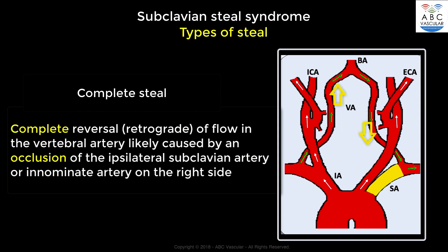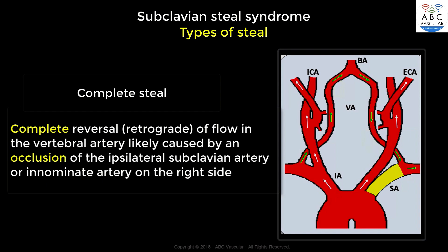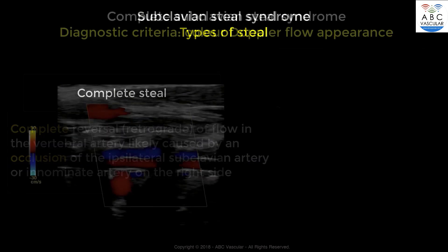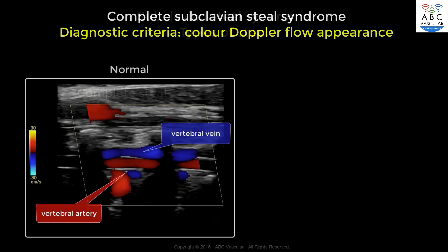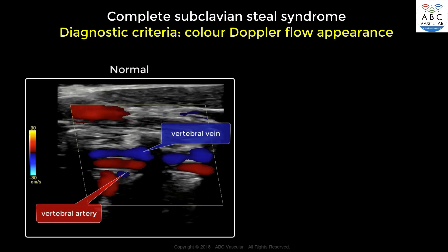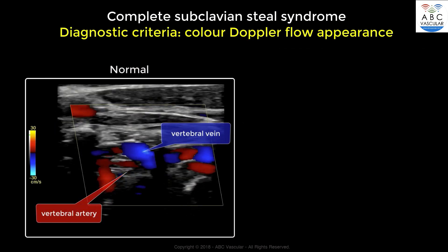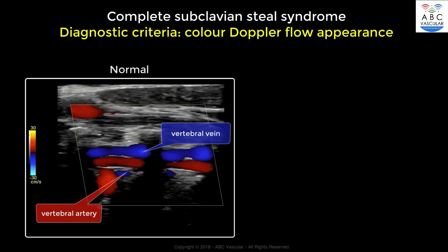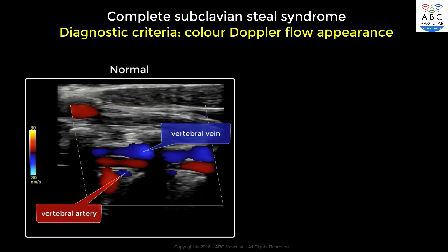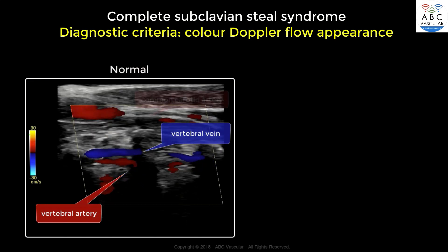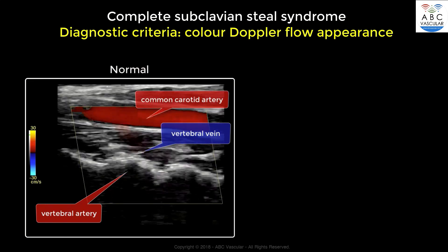The two main ultrasound diagnostic criteria to use for the identification of a complete steal of the vertebral artery are the color Doppler flow appearance and the pulsed wave Doppler waveforms of the affected vertebral artery.